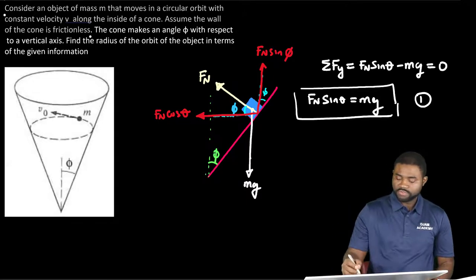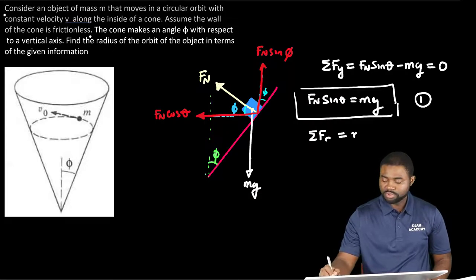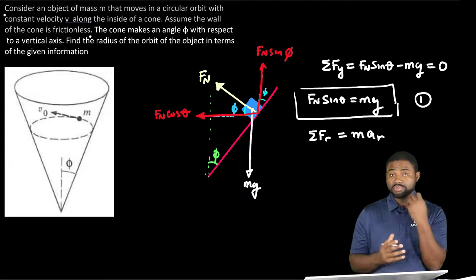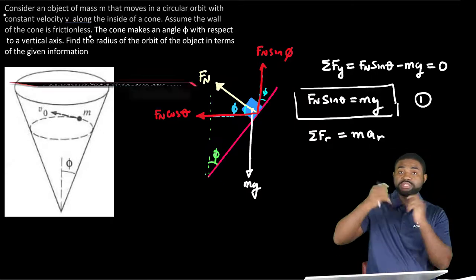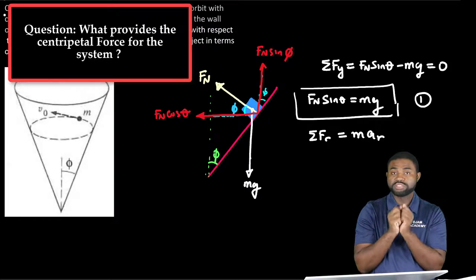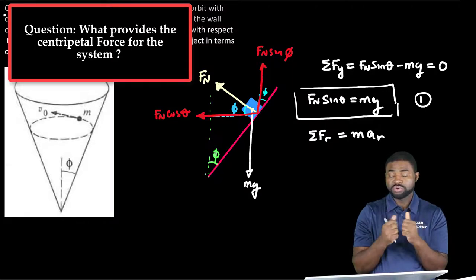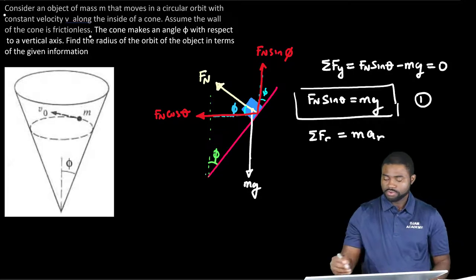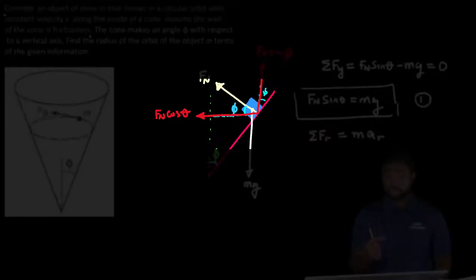Similarly, the summation of forces in the radial direction is going to be equal to ma radial. While we are doing this problem this is what I want you to be thinking about. The car moves around on a circular track inside a cone. So what really provides the centripetal force needed by the car to move around the circular track? Remember that the cone is assumed to be frictionless. So when you look at the only force acting towards the center is the component of the normal force.